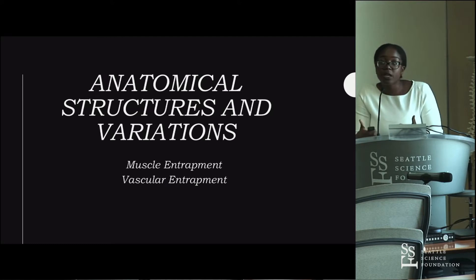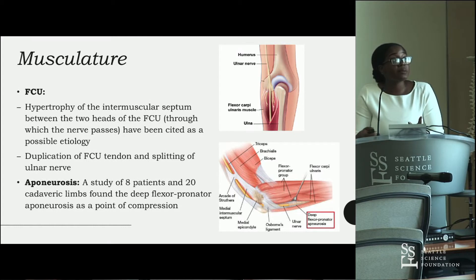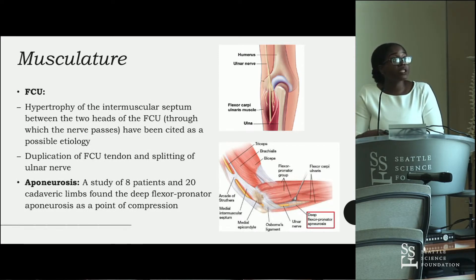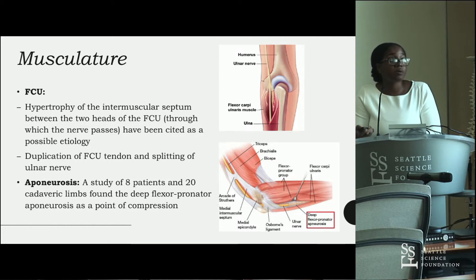Anatomical structures and variations can also cause entrapment syndrome in the forearm. The most common muscular entrapments involve the flexor carpi ulnaris — because the ulnar nerve travels between its two heads, this is a very probable site for entrapment. Duplication of the flexor carpi ulnaris tendon and splitting of the ulnar nerve have also been reported. Variation in the deep flexor pronator aponeurosis, which lies between the two heads of the flexor carpi ulnaris, can hypertrophy or stretch and compress the ulnar nerve.